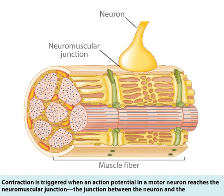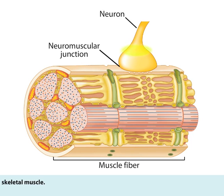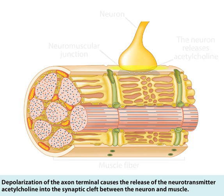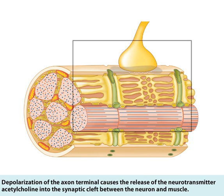Contraction is triggered when an action potential in a motor neuron reaches the neuromuscular junction, the junction between the neuron and the skeletal muscle. Depolarization of the axon terminal causes the release of the neurotransmitter acetylcholine into the synaptic cleft between the neuron and muscle.